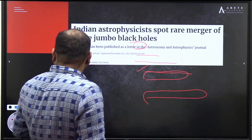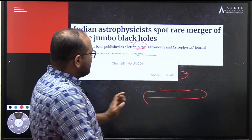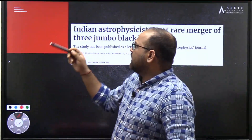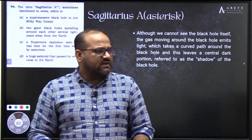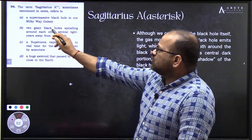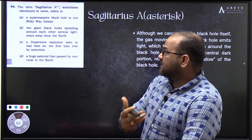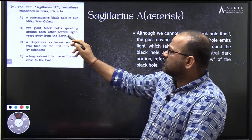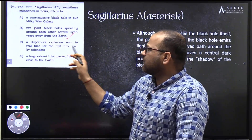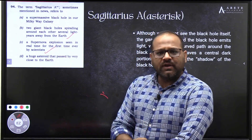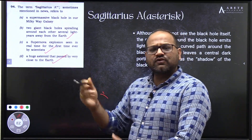Now let's look at the other options UPSC gave. Two giant black holes spiraling around each other - this was also in the news. A supernova explosion seen in real time for the first time ever by scientists - this was also in news. A huge asteroid that passed very close to Earth - this was also in the news. UPSC carefully crafts all options from real current events.